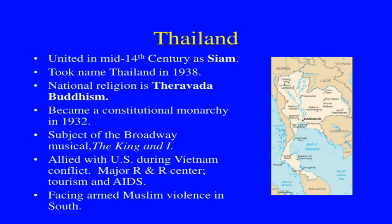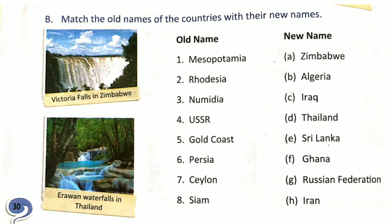In today's lecture we learned about the new names and old names of countries. Now we are doing an exercise. Question 1: Match the old names of the countries with their new names. Here we see old names and new names. First, Mesopotamia — Mesopotamia is the old name of Iraq. Its new name is Iraq and old name is Mesopotamia.